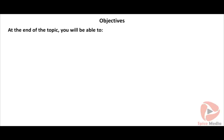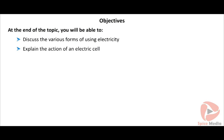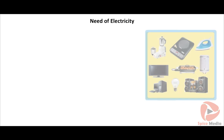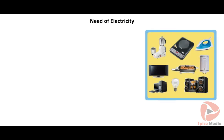At the end of the topic, you will be able to discuss the various forms of using electricity, explain the action of an electric cell, differentiate the two types of cells, and list down the appliances that run on electric cells. In this modern world, we totally depend on electricity to survive.